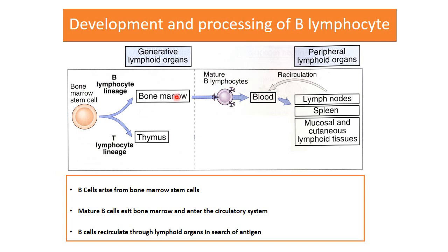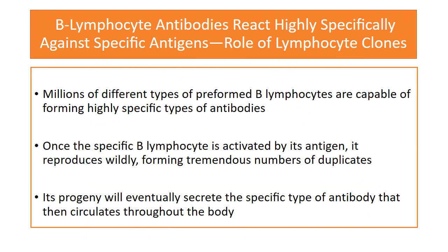After pre-processing in the bone marrow, the matured B lymphocytes come out of the bone marrow and enter into circulation, then recirculate between blood and lymphoid organs like lymph nodes and spleen in search of antigen to be activated. Millions of different types of pre-formed matured B lymphocytes are capable of secreting around 100,000 types of highly specific antibodies, because during pre-processing in the bone marrow the gene segments mix with each other in random combinations.